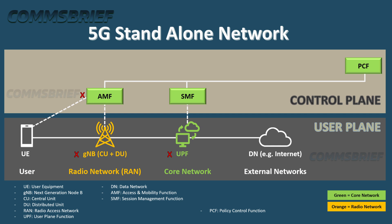UPF is the User Plane Function which, as the name suggests, is part of the user plane and connects the mobile phone via gNB to outside networks like the internet. UPF is connected to the Session Management Function, SMF, which is another box in the picture. SMF is part of the control plane — so it's different, it's in the control plane.